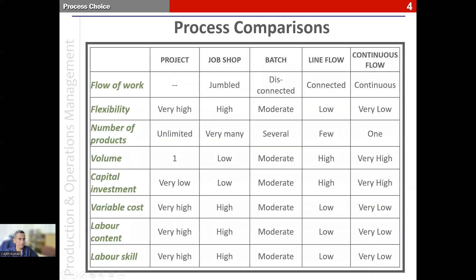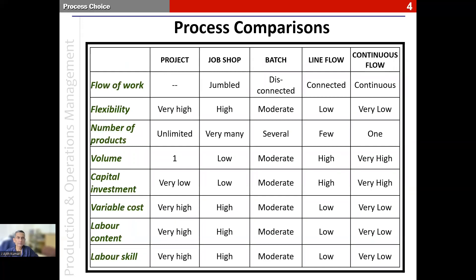Now we will compare the five types of processes on multiple dimensions. In the very first video we saw three of these dimensions; now we will see some more. Along the dimension known as flow of work, in the case of a project we don't talk about flow of work, but in the case of a job shop it is jumbled, the batch process is disconnected, then connected, and then continuous as we move to the right.